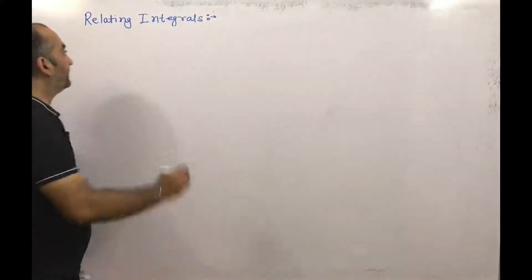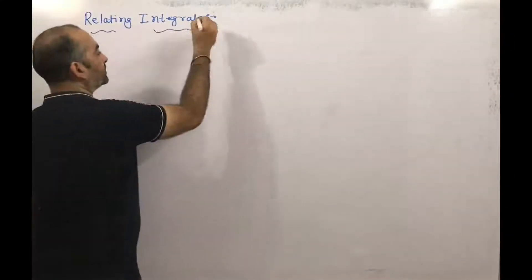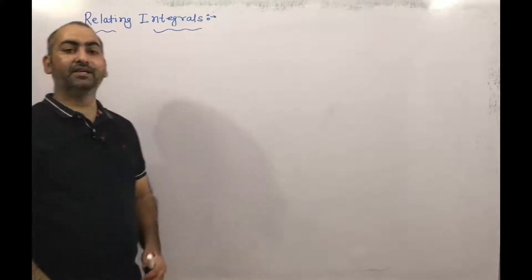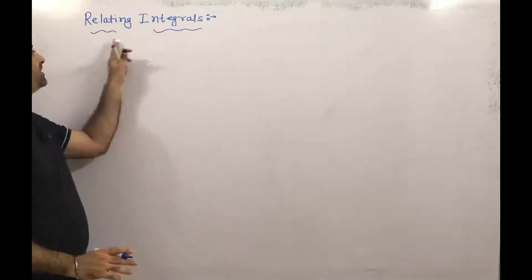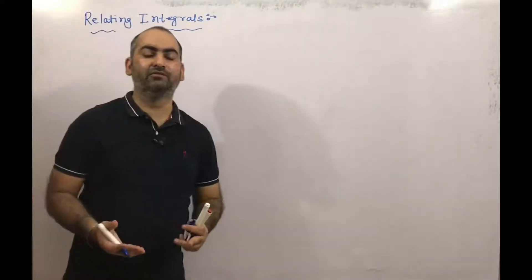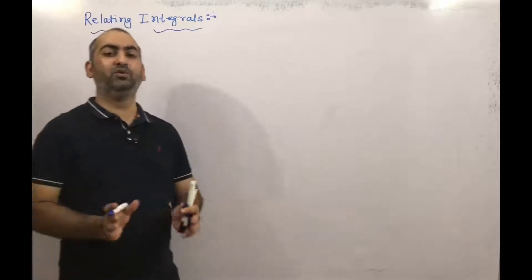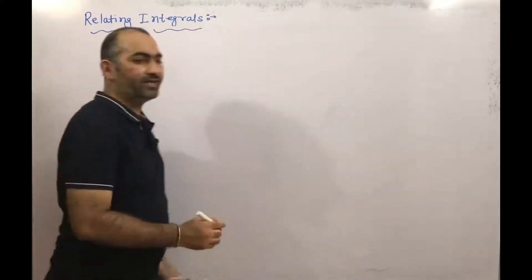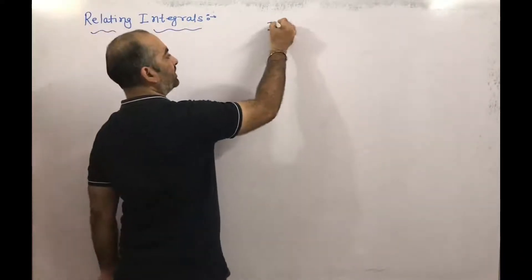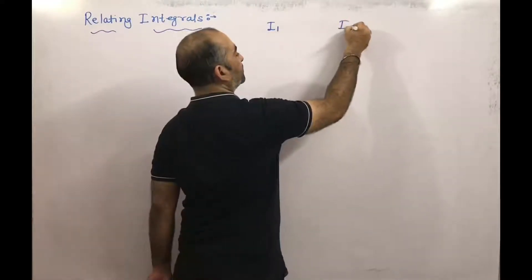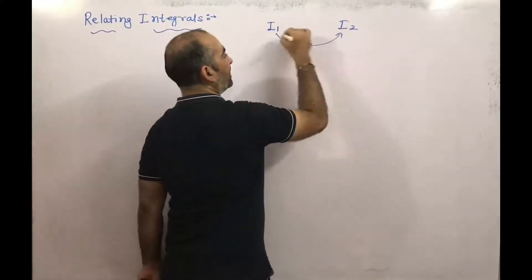Next, we are discussing relating integrals. From the name only, we can say that here 'relating integrals' means there are two integrals involved. We want to find out the relation between two integrations — for example, one integration is I1 and the other is I2, and we find the relation between I1 and I2.